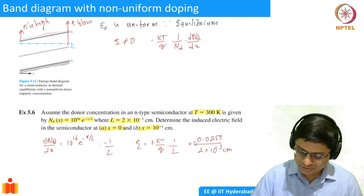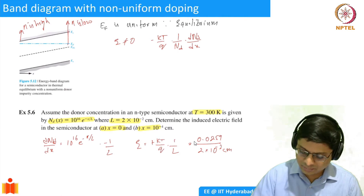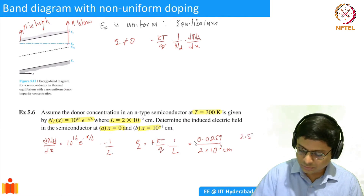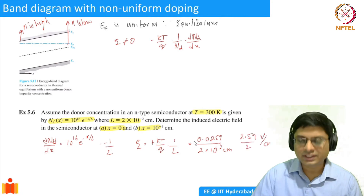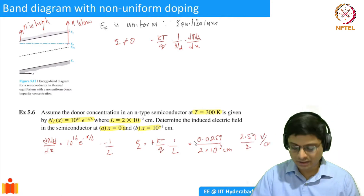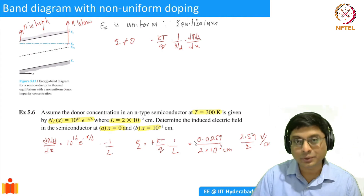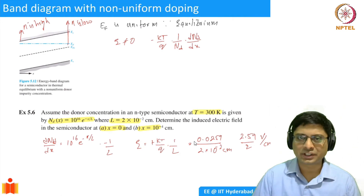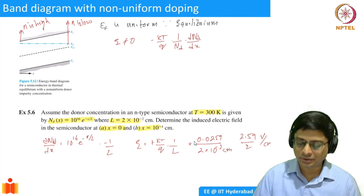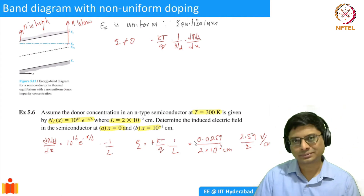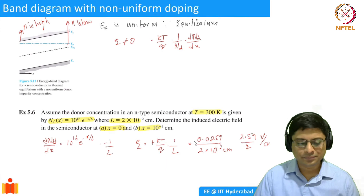So you calculate this and estimate: it's going to be on the order of 10², giving approximately 2.59/2 ≈ 1.295 volts per centimeter. You should check whether this depends on position at x equals 10⁻⁴ cm.